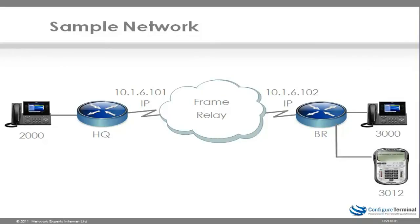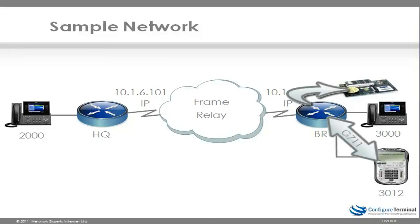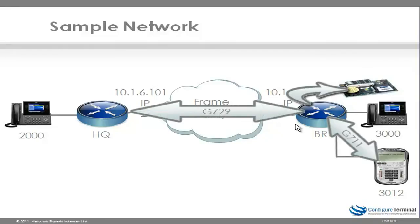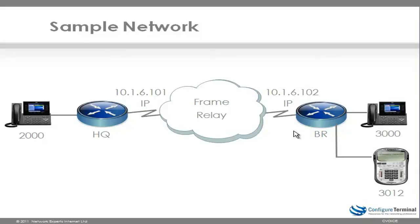Our sample topology builds on a topology from previous videos where we set up a SIP client — in this example the X-Lite client — to communicate with the branch router. The X-Lite client is configured to use G.711 ULAW, as is Cisco Unity Express within the branch router. We want to set up the WAN to use G.729 to save on bandwidth, but still allow the HQ phone to communicate with the X-Lite client. So we're going to do transcoding on the branch router between G.729 and G.711, as well as allowing the HQ phone to leave a voicemail on Cisco Unity Express, which only supports G.711 ULAW.